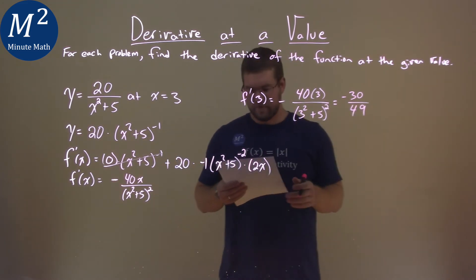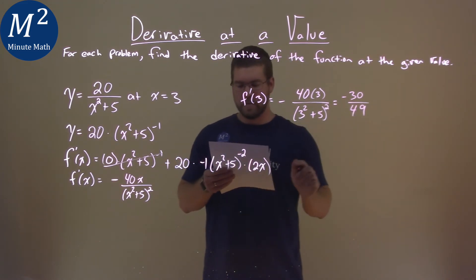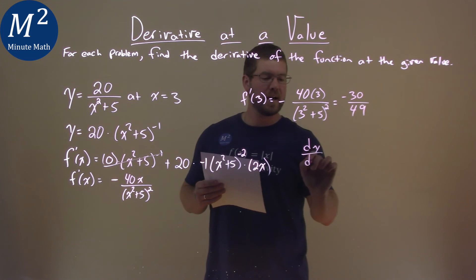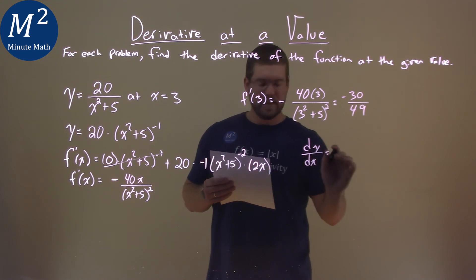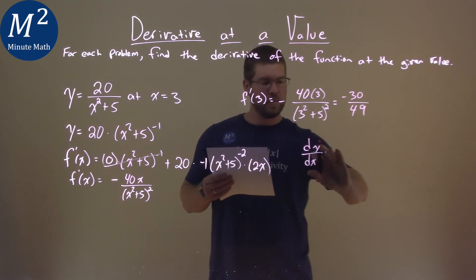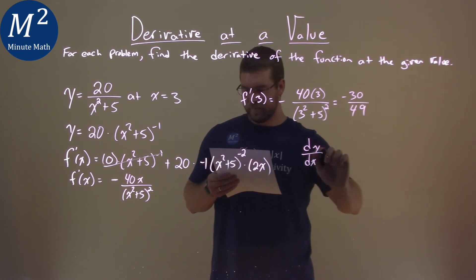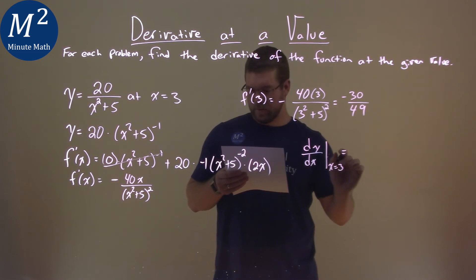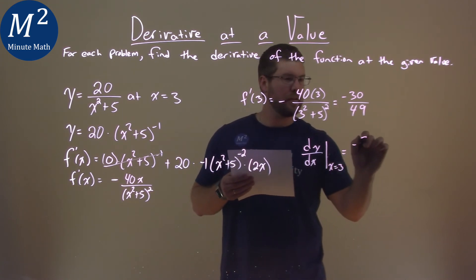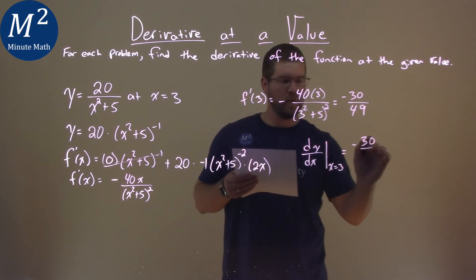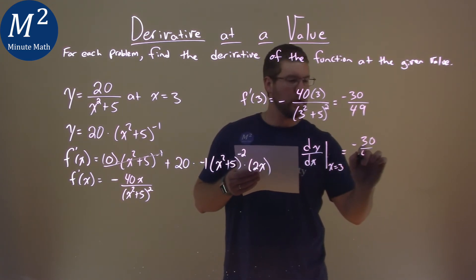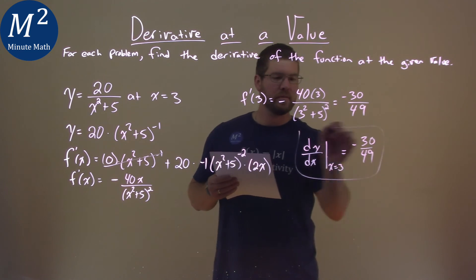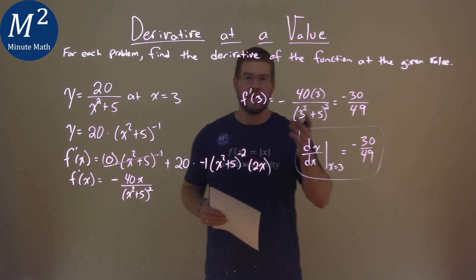So if we want to write this as a final statement, we would say dy/dx when x is equal to 3 is equal to negative 30 over 49, and that is our final answer.